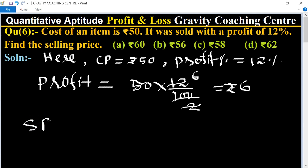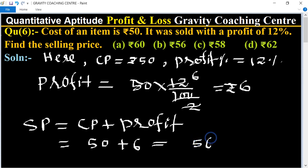So we know that the formula of selling price equal to CP plus profit. Here CP is 50 and profit is 6, so total equal to 56 is the selling price.